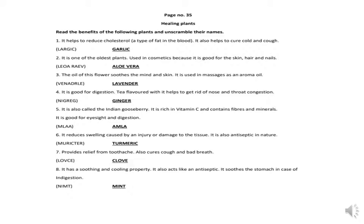Fifth one: it is also called the Indian gooseberry. It is rich in vitamin C and contains fibers and minerals. It is good for eyesight and digestion. Your answer is amla. Sixth: it reduces swelling caused by an injury or damage to the tissue. It is also antiseptic in nature. Your answer is turmeric.